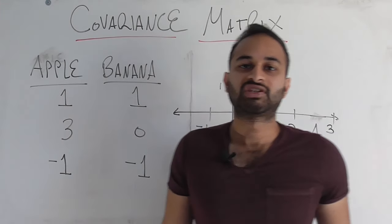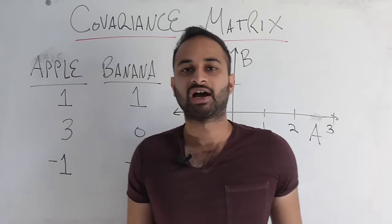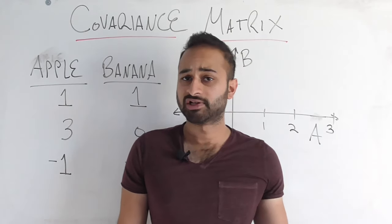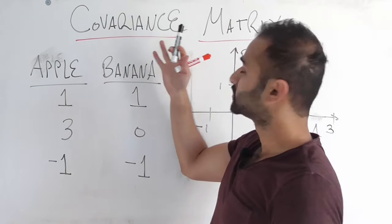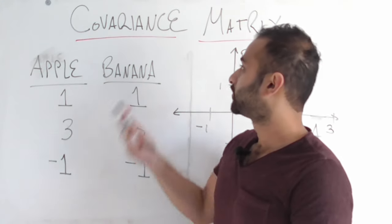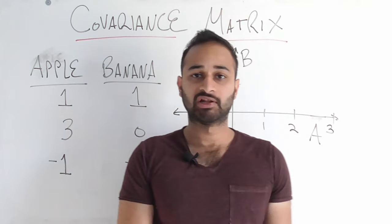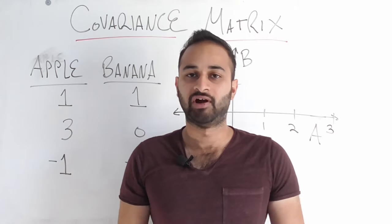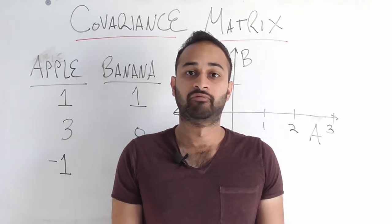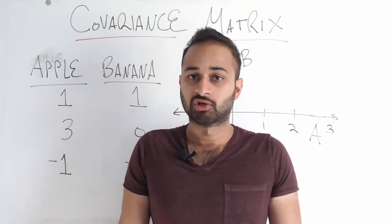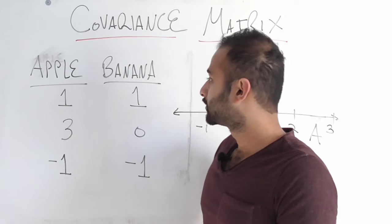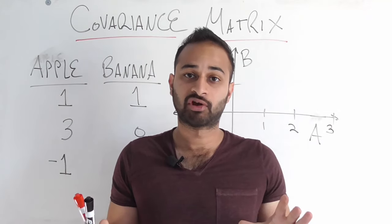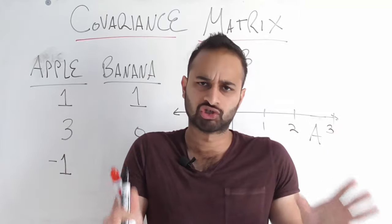What is up everyone? In this video we're going to be talking about a pretty intuitive and also really cool concept in data science called the covariance matrix. As you might have guessed from the name, the covariance matrix is just a big matrix that's filled with various covariances between variables in our data. So let's go ahead and look at a simple 2x2 case of the covariance matrix to get a feel for how it's constructed.